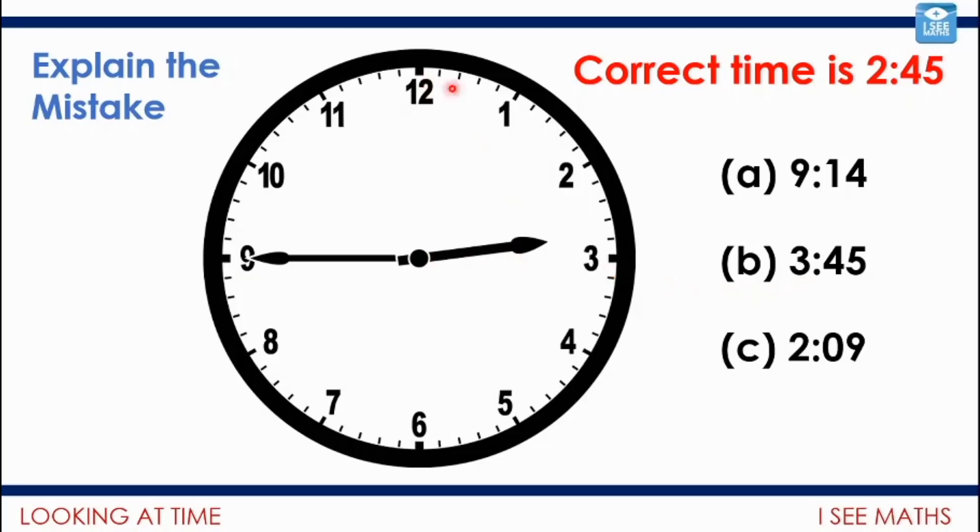3:45. I've got the minutes right. 45 minutes. But of course, it's not 3:45, even though the hour hand is close to the three, because we've not got to three o'clock yet. We're between two and three. Whereas 2:09, we've got the hour right this time. It's not three o'clock yet. Of course, that's not nine minutes. That's nine lots of five minutes. 45 minutes. See how there's so much to get your head around when you're learning to read clocks.